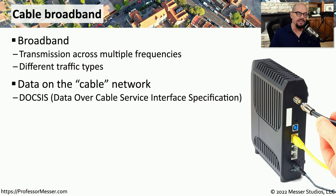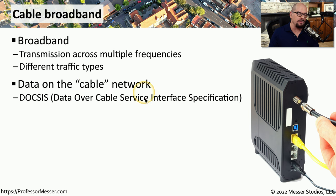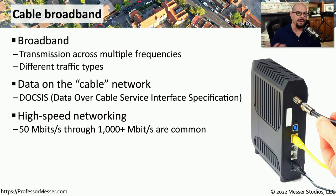If your home or your business is serviced by a cable company, they may be able to provide you with cable broadband, bringing in video, voice, and data communication over the same wire you would commonly use for cable television. The standard for sending this data over cable networks is called DOCSIS, which stands for Data Over Cable Service Interface Specification. This DOCSIS standard supports very high speeds, and it's not unusual to find DOCSIS networks that are one gigabit or even higher in speed.